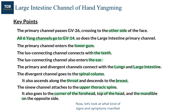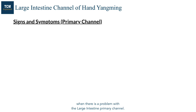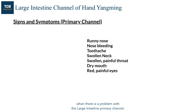Now let's look at what signs and symptoms manifest when there is a problem with the large intestine primary channel: runny nose, nose bleeding, toothache, swollen neck, painful throat, dry mouth, and red painful eyes.